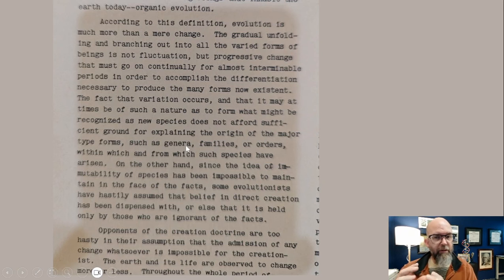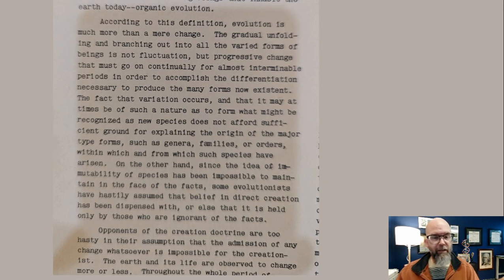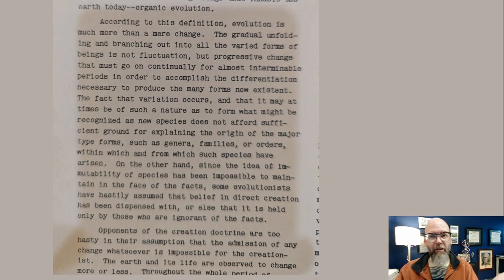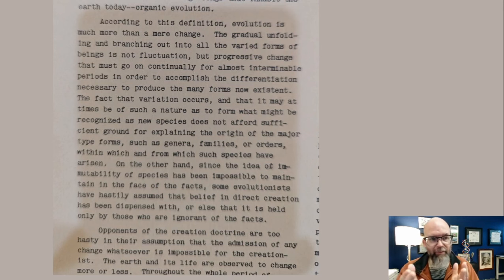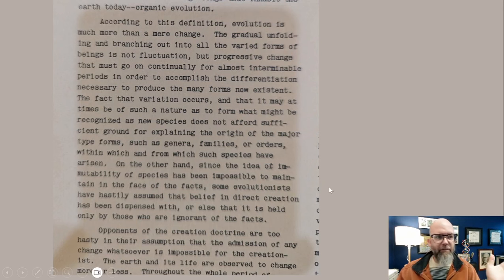Clark says there's variation among all species — everybody recognizes it, just like Darwin did. And he's already admitted that because of variation, some individual variants are better than others, changing the ratio of different variants in future generations. He's saying we can make new species, but it doesn't afford sufficient ground for explaining the origin of major type forms like genera. That would limit a kind to just, say, coyotes and wolves — but foxes would be a completely different kind, separately created by God. There'd have to be a fox on Noah's ark, and also a wolf-type thing. Ken Ham says there's just one pair, which puts them all in the same kind.